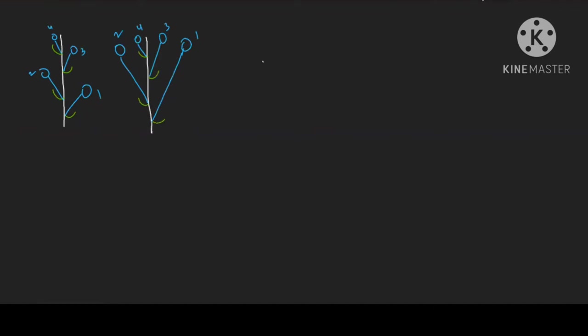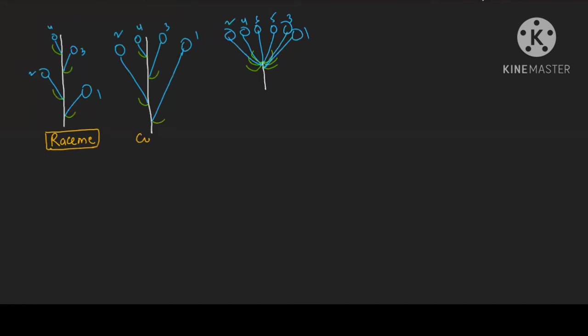The third type is condensed — the internodal areas are not seen, only nodal areas are visible. So here we have first bract, second bract, third, fourth, fifth, and sixth, each bearing a flower. We draw the smallest flower at the top because in racimose inflorescence, acropetal succession is occurring — meaning the youngest flower is at the apex.